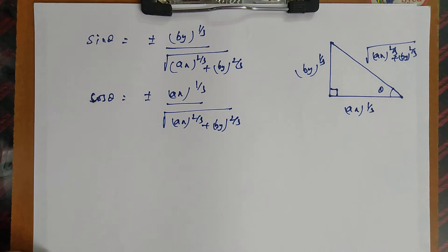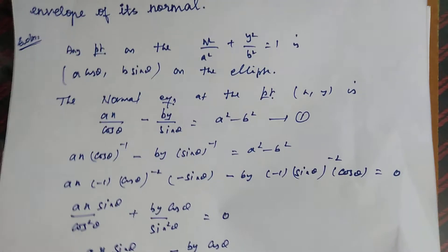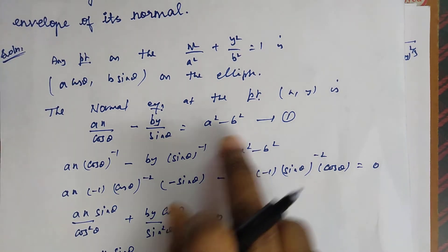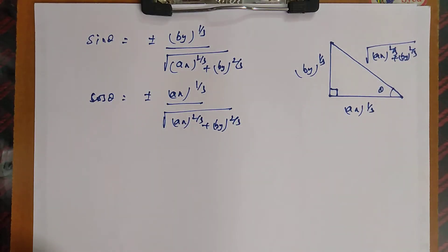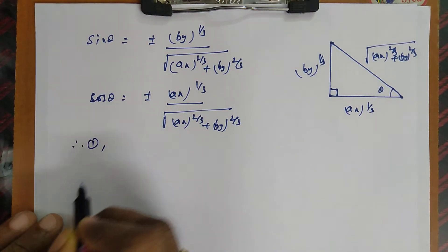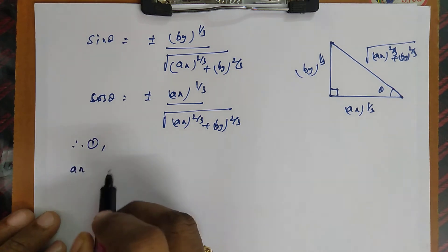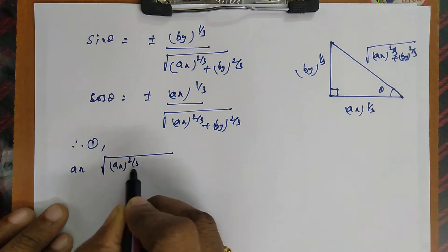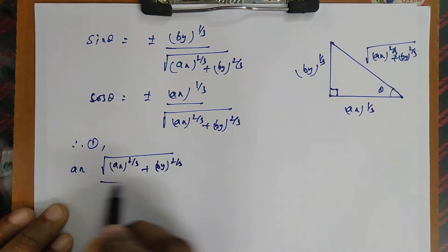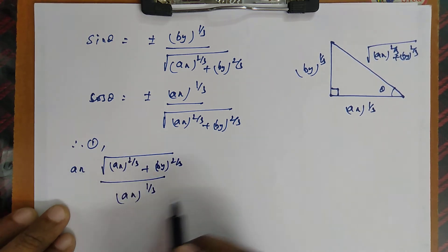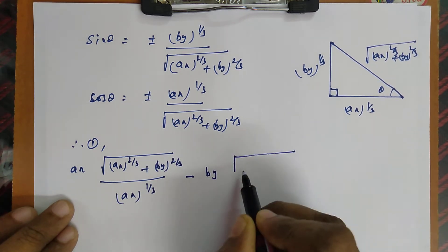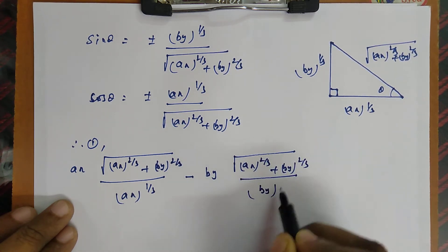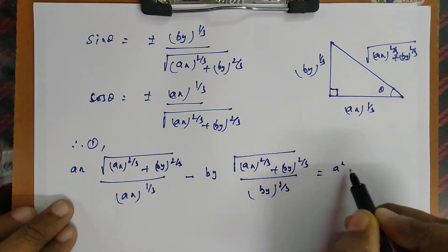Now we substitute the values of cosθ and sinθ back into equation 1: ax / cosθ − by / sinθ = a² − b². Substituting, 1/cosθ = √((ax)^(2/3) + (by)^(2/3)) / (ax)^(1/3), so equation 1 becomes: ax · √((ax)^(2/3) + (by)^(2/3)) / (ax)^(1/3) − by · √((ax)^(2/3) + (by)^(2/3)) / (by)^(1/3) = a² − b².